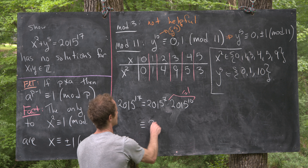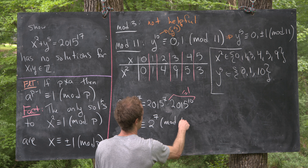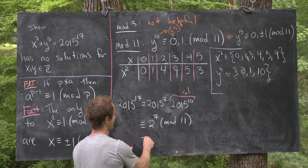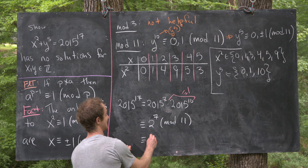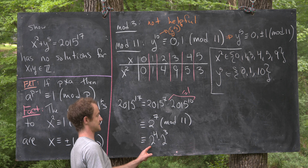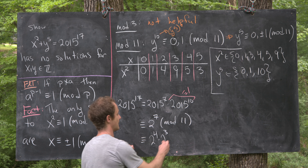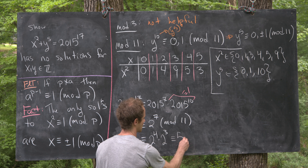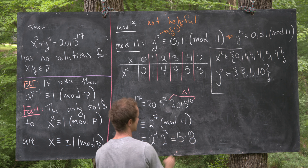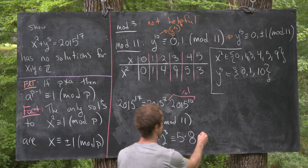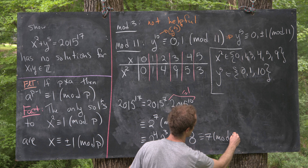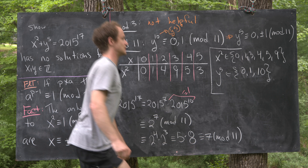Now 2 to the 7 is the same as 2 to the 4 times 2 cubed. But 2 to the 4 is 16, which is 5 mod 11. So this is congruent to 5 times 8, which is 40. And 40 is congruent to 7 mod 11, because it's 7 more than 33, which is a multiple of 11.